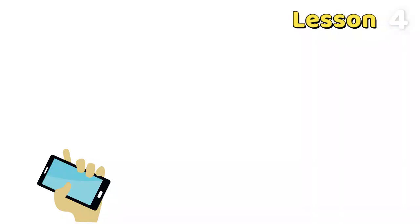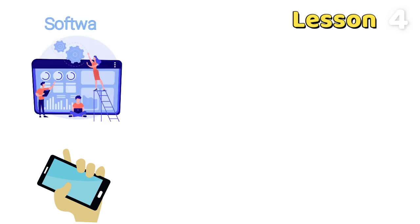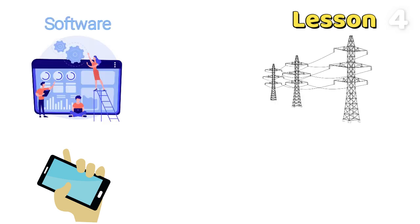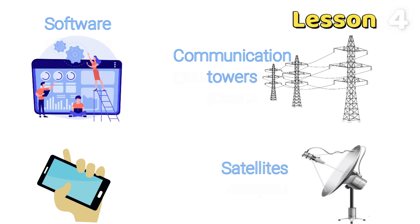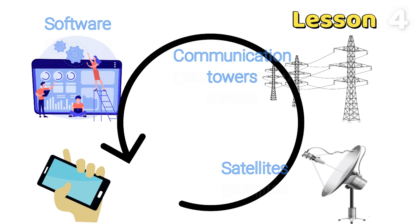But there are many other parts that work to transfer information from one place to another, such as software, communication towers, and satellites. When all these parts and elements come together and each part works correctly, the communication system can perform its work in a way that individual parts cannot.